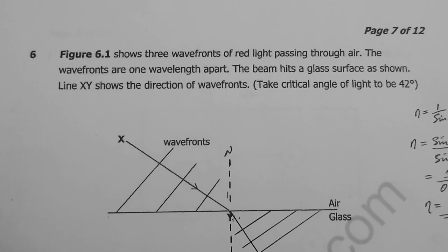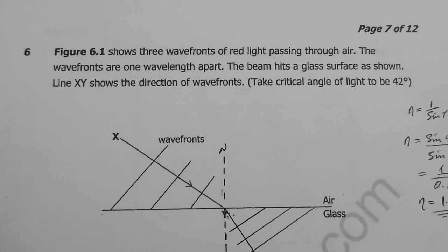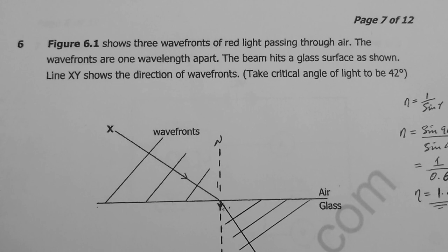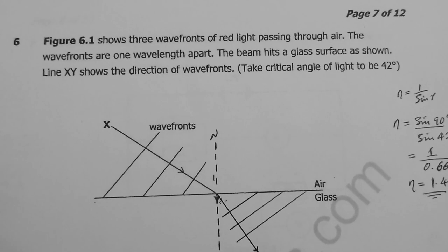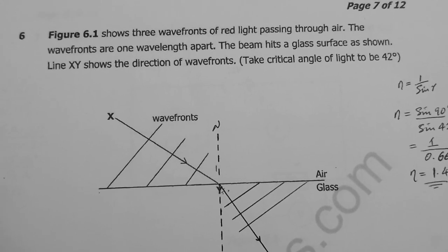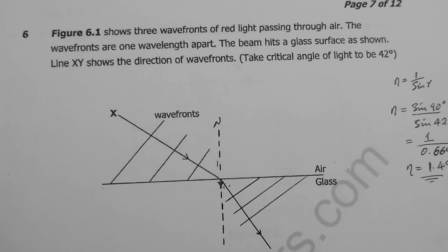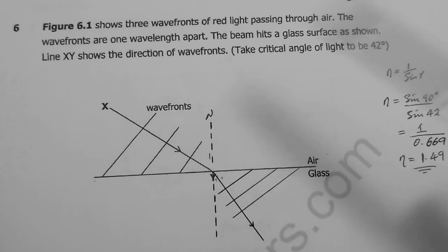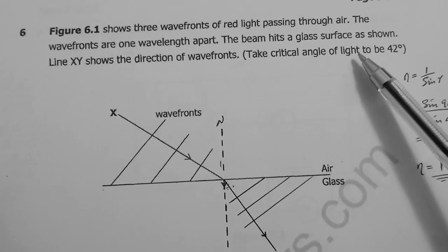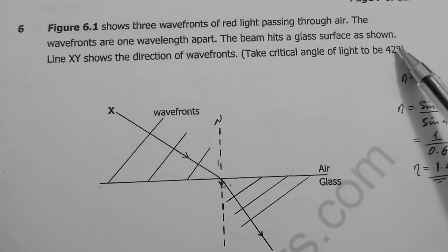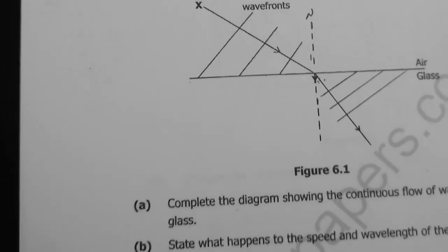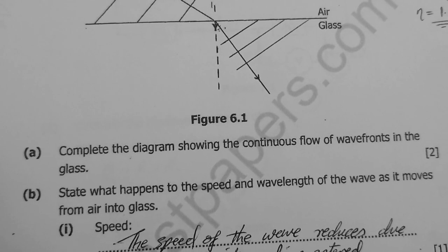Question six: the figure shows three wavefronts of red light passing through air, one wavelength apart, hitting a glass surface. Line XY shows the direction of the wavefronts. Rays have arrows showing the wave's direction; wavefronts are at right angles to the rays. The task is to complete the diagram showing continuous wavefronts in the glass.